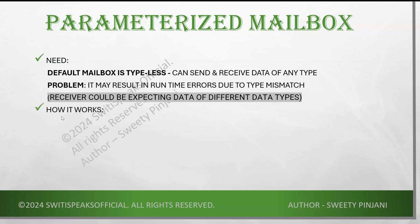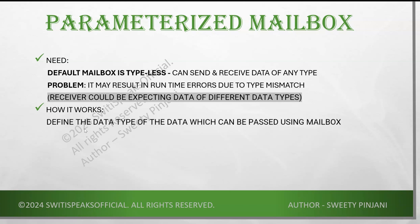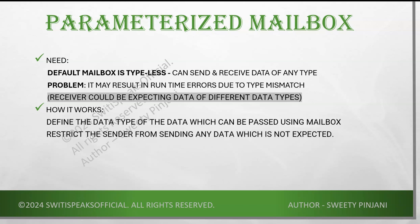How does the parameterized mailbox work? First you define the data type which can be passed using this mailbox — the data type will be fixed. Once you specify this data type, the mailbox will restrict the sender from sending any type which is not expected. If you use this in scenarios where the receiver is expecting only a specific type of data, it will not result in runtime errors. This problem can be mitigated with the help of parameterized mailbox.